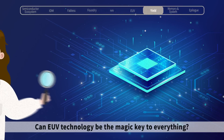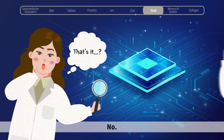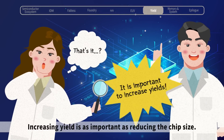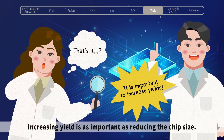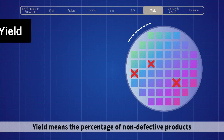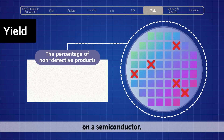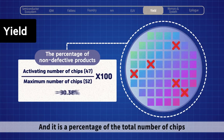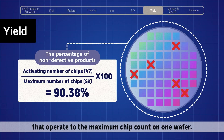Can EUV technology be the magic key to everything? No. Increasing yield is as important as reducing the chip size. Yield means the percentage of non-defective products on a semiconductor — it is the percentage of the total number of chips that operate, relative to the maximum chip count on one wafer.